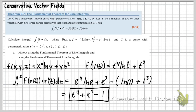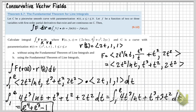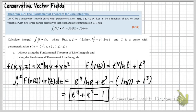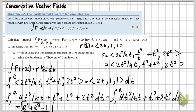So if you're given a potential function and asked to find F dot dR, remember to think about the fundamental theorem for line integrals. This method is much faster — the direct method requires doing integrals by hand including integration by parts, while the FTLI method is very quick once you have the potential function.